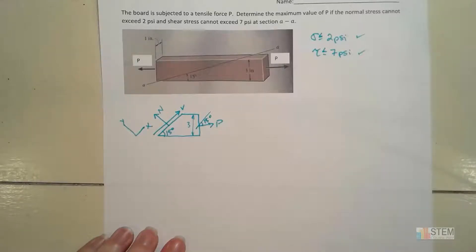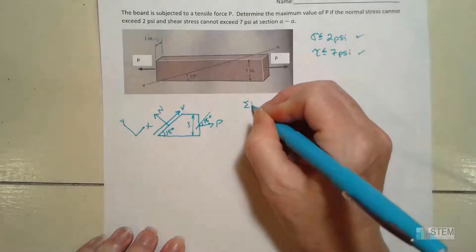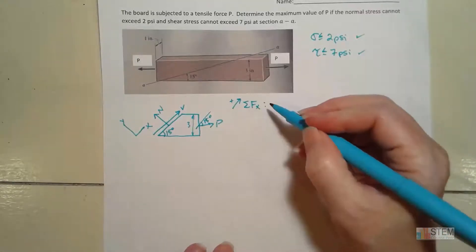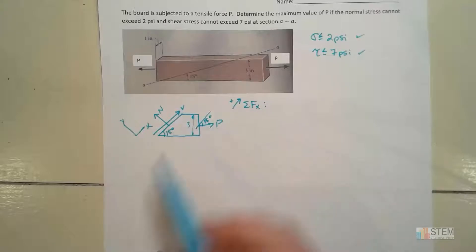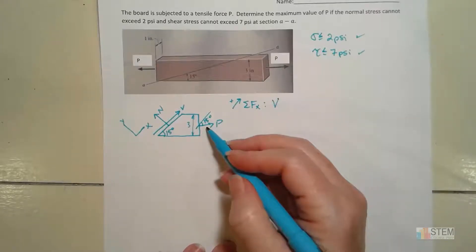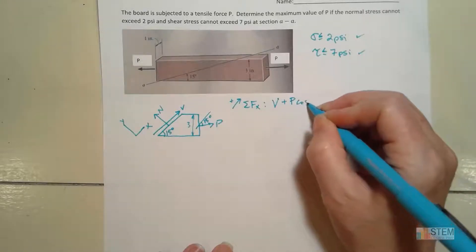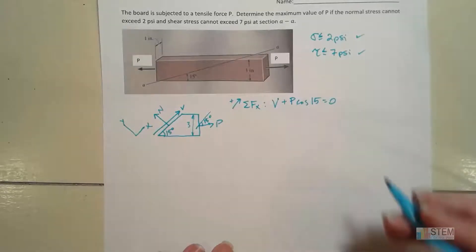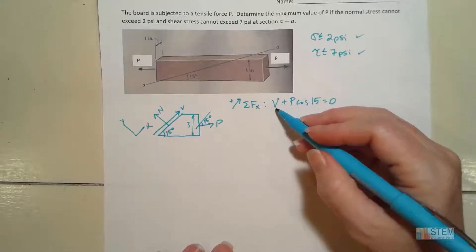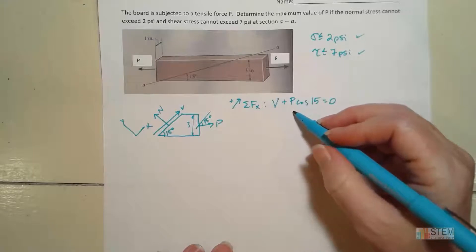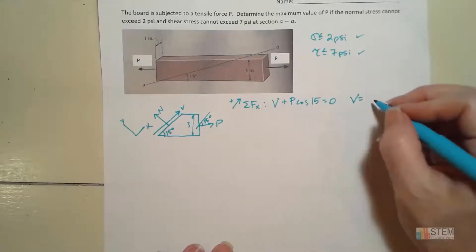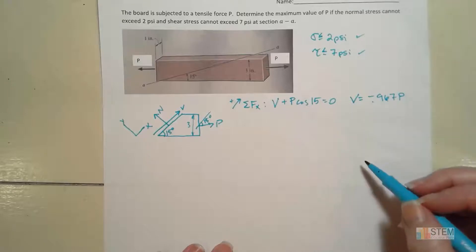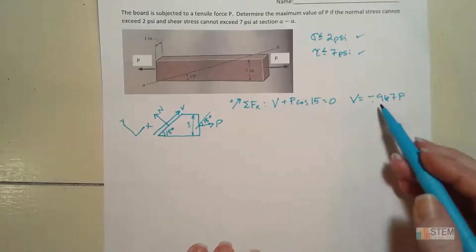Now let's go ahead and do our equilibrium equations, since we're going to assume equilibrium here. Looking at our X equation, going up and to the right is positive. We're going to have a positive V, and then a positive P cosine 15, and set that equal to zero. We have two unknowns — V and P — and we're looking to solve for P. Solving for V gives us negative 0.967 P. The negative sign just means we picked the wrong direction for our diagram, which is fine.